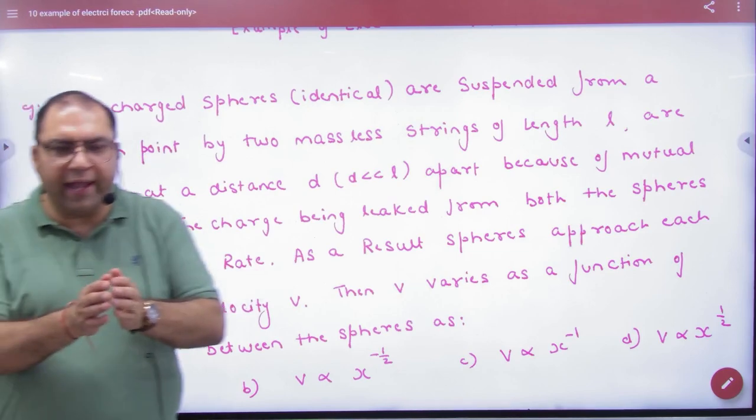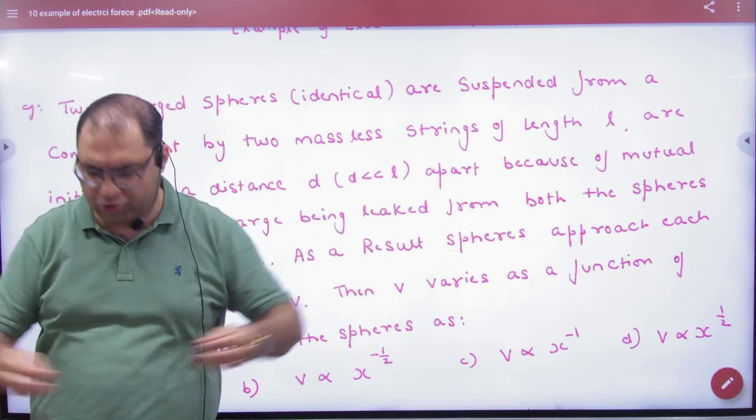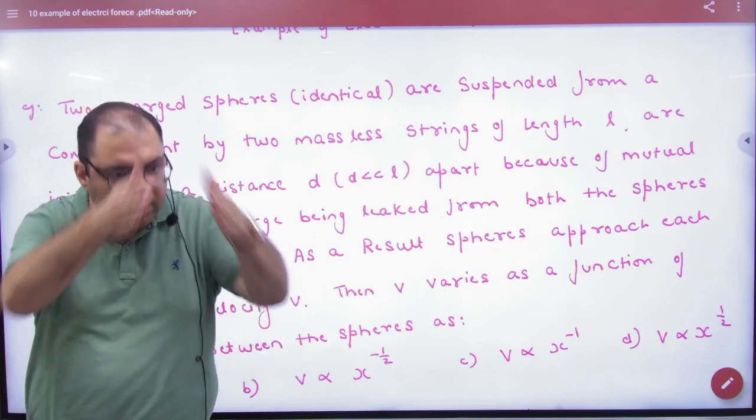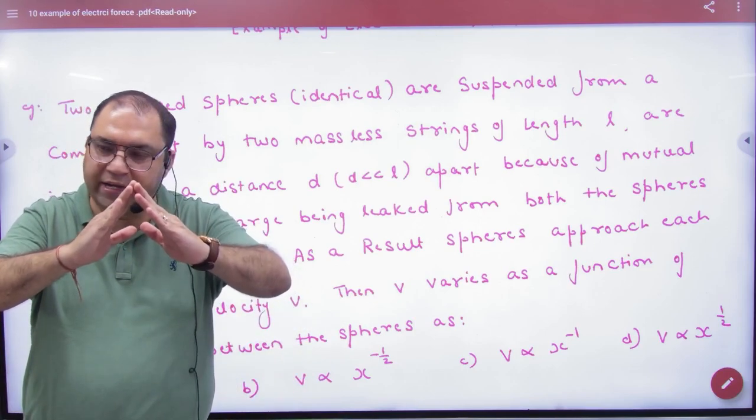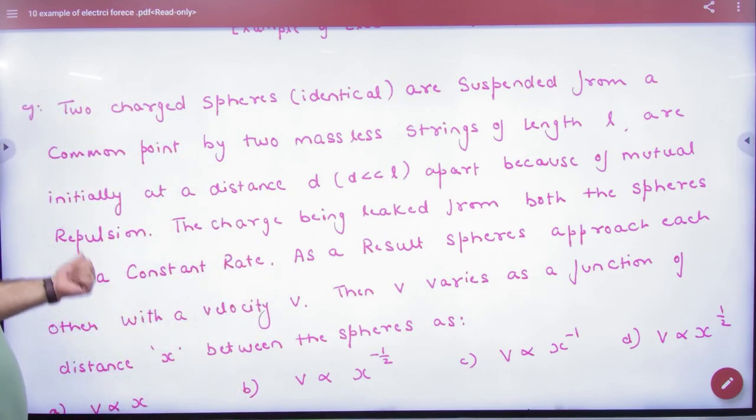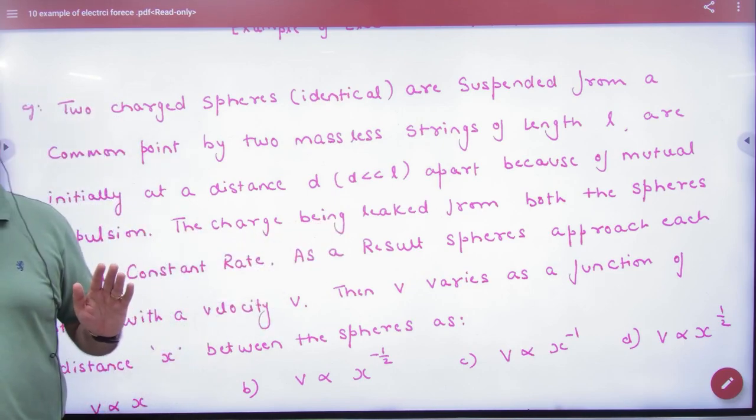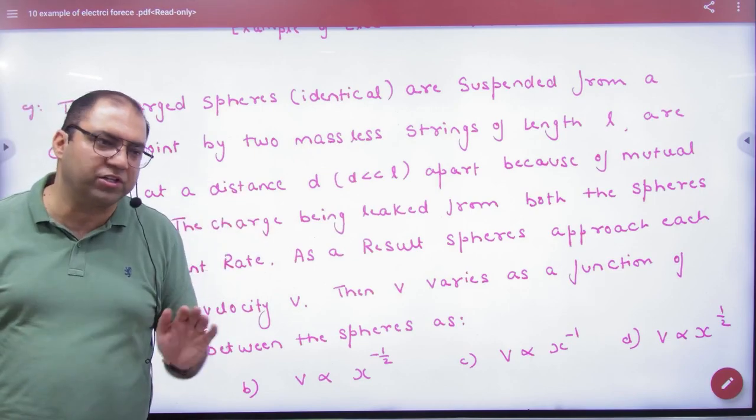L is very big, but D is not very big. D is small, L is big. They stopped. Why did they stop here? Because of their mutual repulsion. Now they are saying the charge is leaking from both spheres. How did it leak? I don't know.